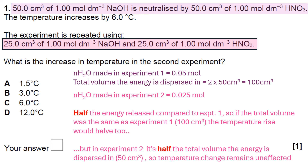Therefore, because the question states the temperature increases by 6.0°C in the first experiment, and in experiment two half the energy is released but dispersed in half the volume, those two effects combined mean the actual temperature change is the same. So we go for answer C. Hopefully this has been a useful look at this slightly tricky conceptual idea. Thanks for listening and see you soon.